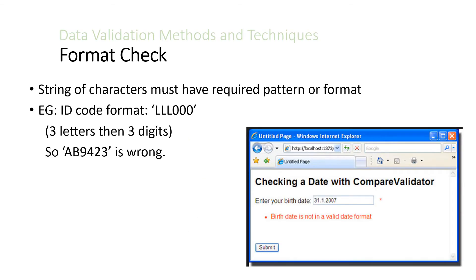There are a whole lot of different checks that we can do on data to validate it. The first one is the format check. Sometimes we have requirements for a string of characters — they need to have a certain format. For example, an ID code needs to have the format LLL-000, meaning three letters followed by three digits. So if somebody typed in 'AB9423' we know that's wrong because that 9 should have been a letter.